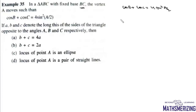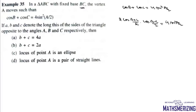We know that cos C + cos D = 2 cos((C+D)/2) · cos((C-D)/2), so it will be 2 cos((B+C)/2) · cos((B-C)/2), and this equals 4 sin²(A/2). Now B+C by 2 equals π/2 − A/2, and cos(π/2 − A/2) is sin(A/2), so we write 2 sin(A/2) · cos((B-C)/2) = 4 sin²(A/2).